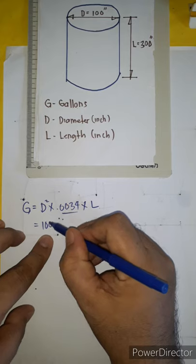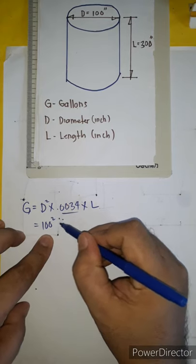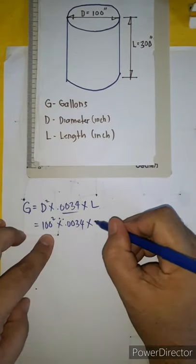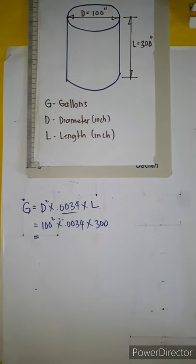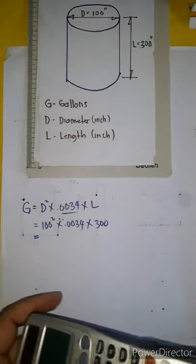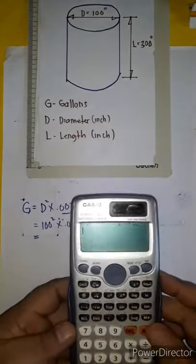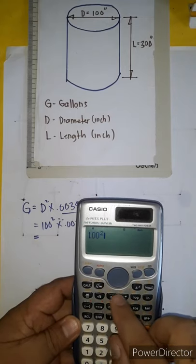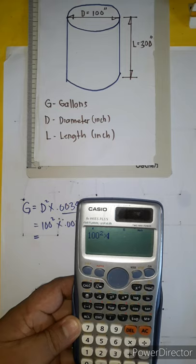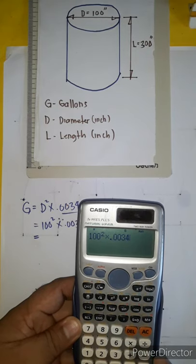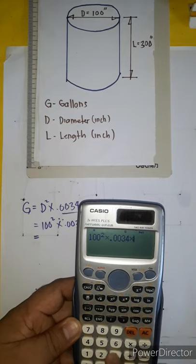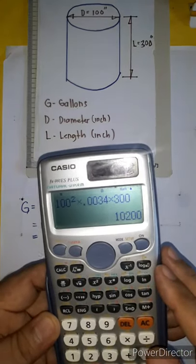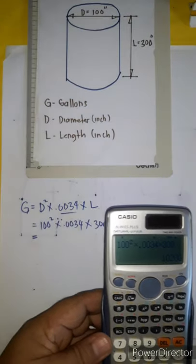So the equation is: 100 squared times 0.0034 times 300. Let's calculate: 100 squared — this is the diameter — times the constant 0.0034, times the length of 300 inches. The answer is 10,200.